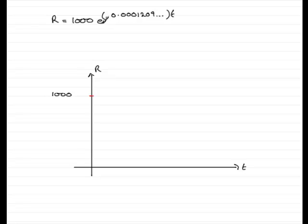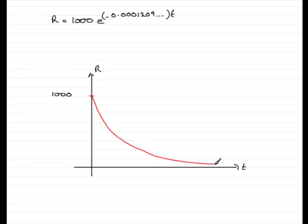Now we have a negative exponential graph — exponential decay. We should know that as t gets larger, this quantity here tends to 0. 0 times 1,000 would be 0. So we have a graph that's going to come down quite rapidly at first and then slowly taper off towards the t-axis. So there is a sketch of your graph.